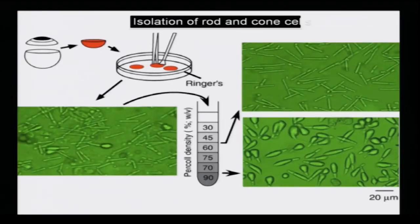Once the rods and cones are isolated in cell culture, this is how they look — these rod-like cells are a bit more purified here. You have the rod cells and the cone cells — this is how they look like in a culture dish. That is why I wish you people to have a clear idea of how they look in the culture dish and how they grow.